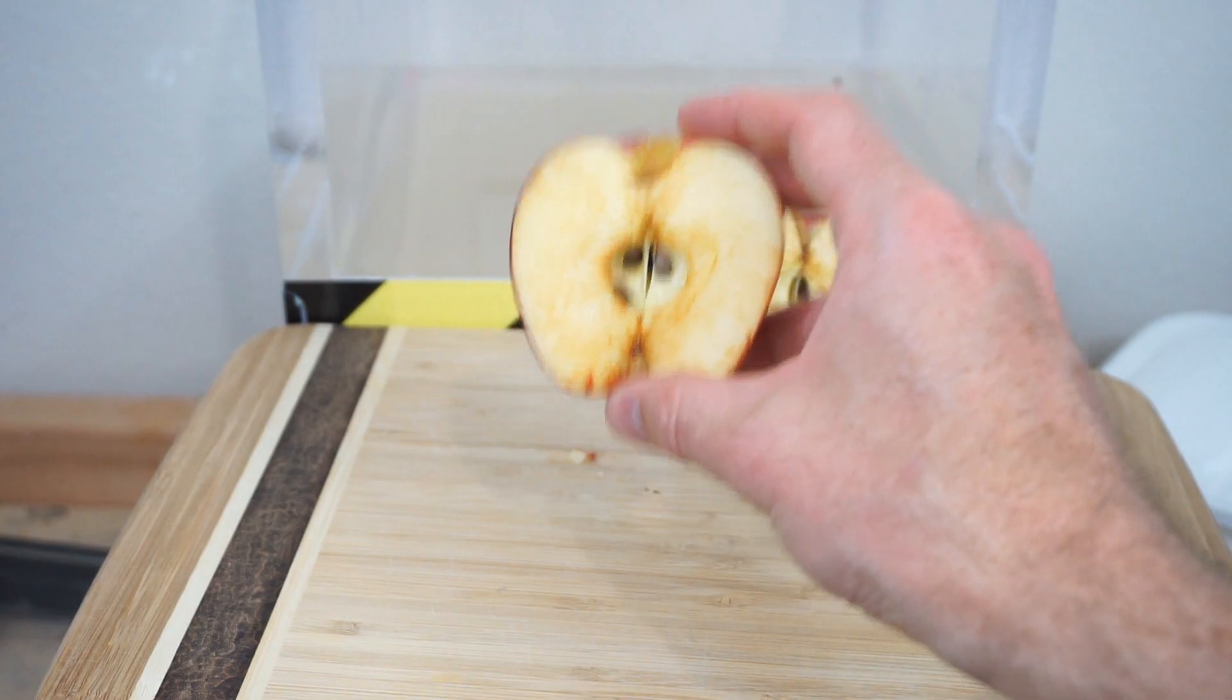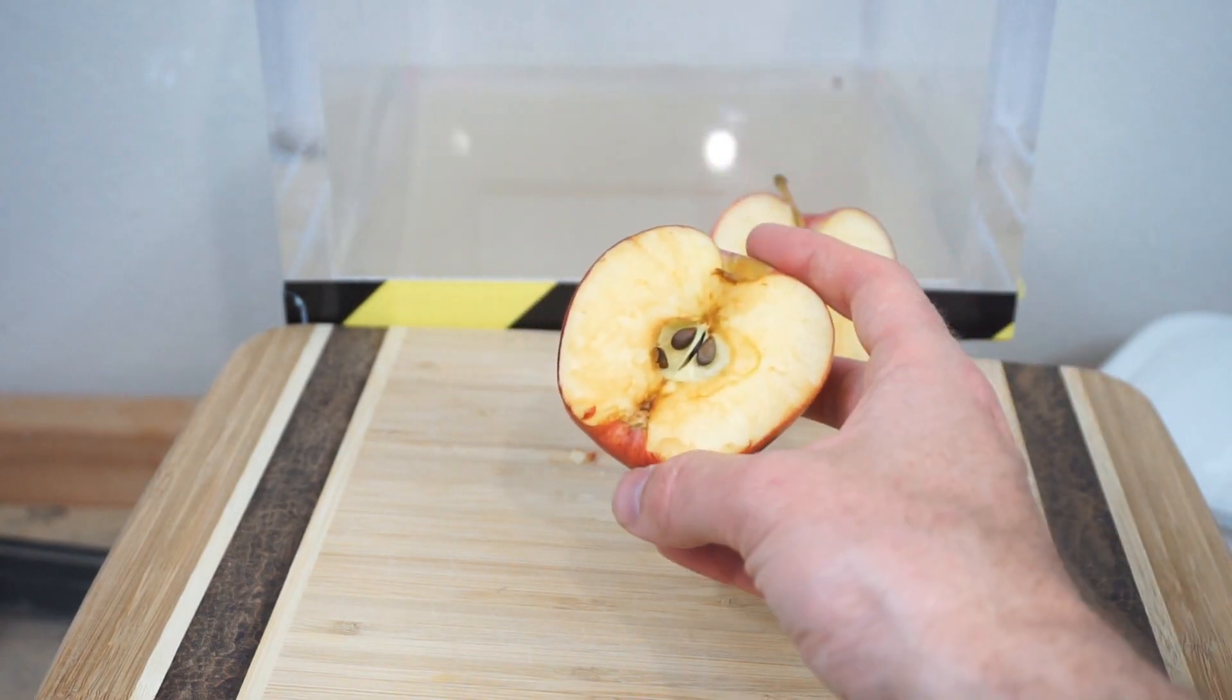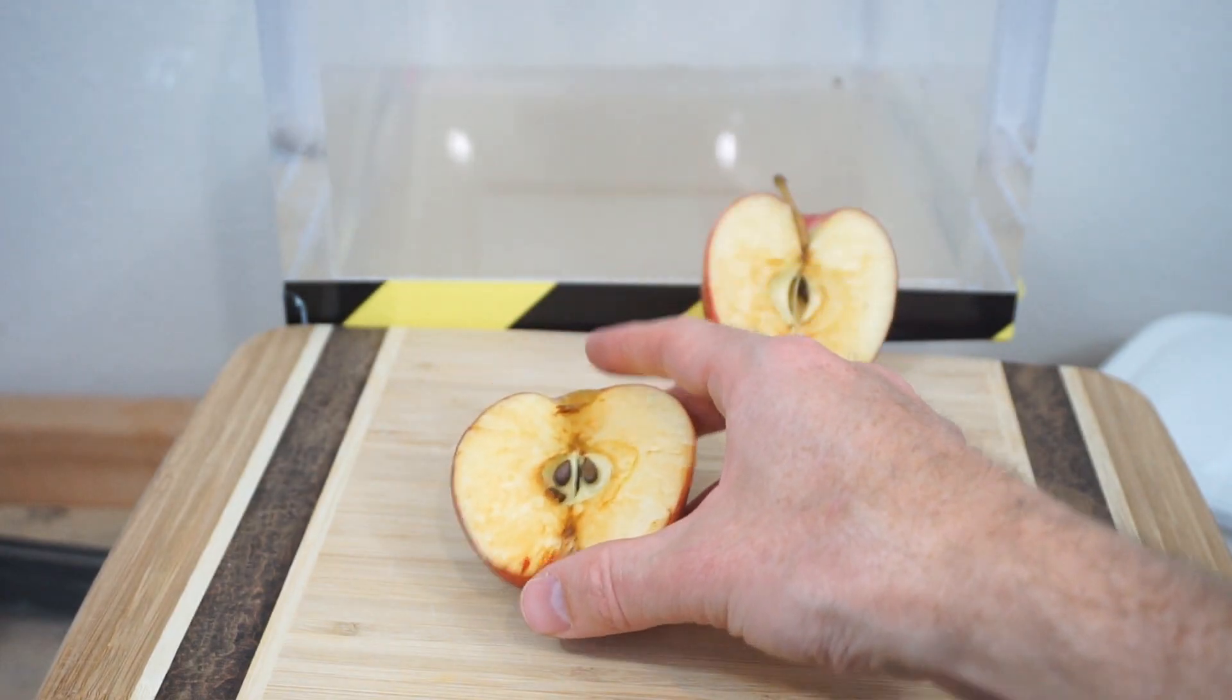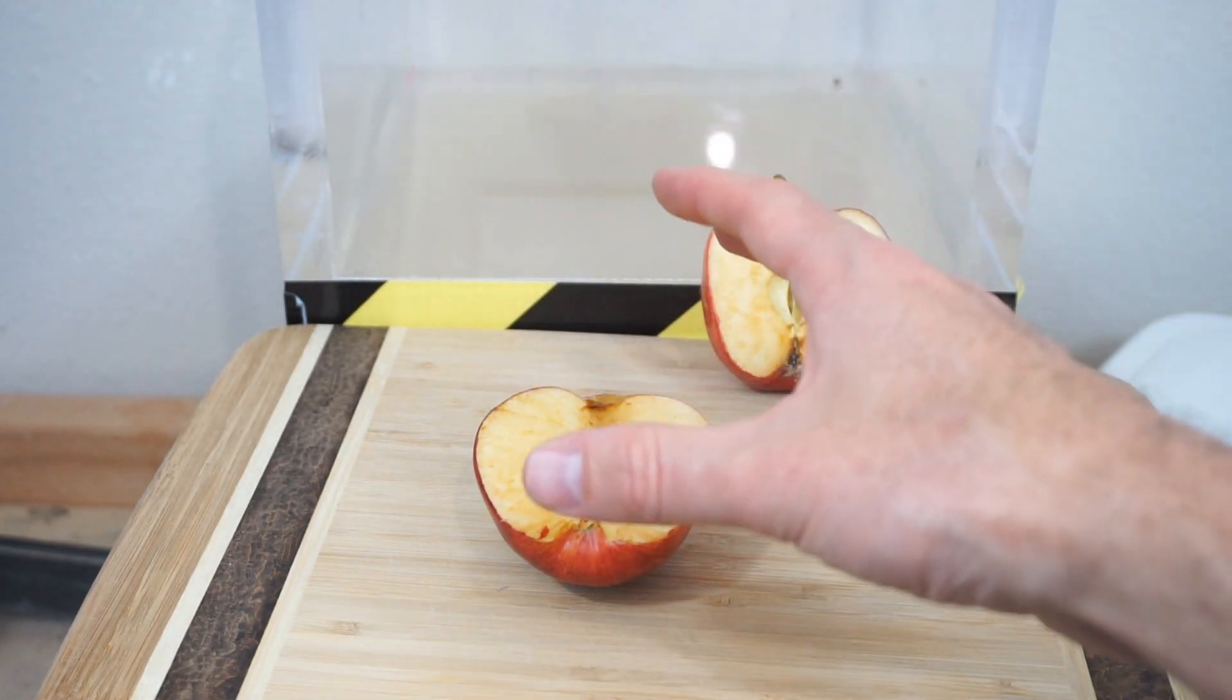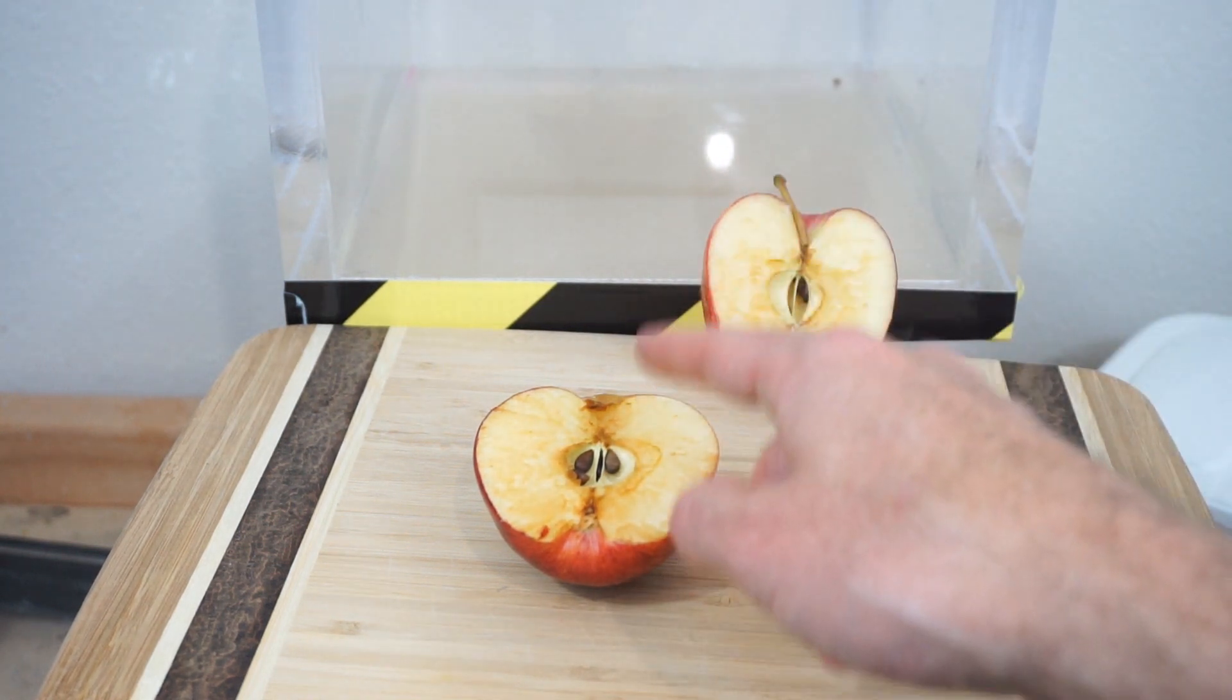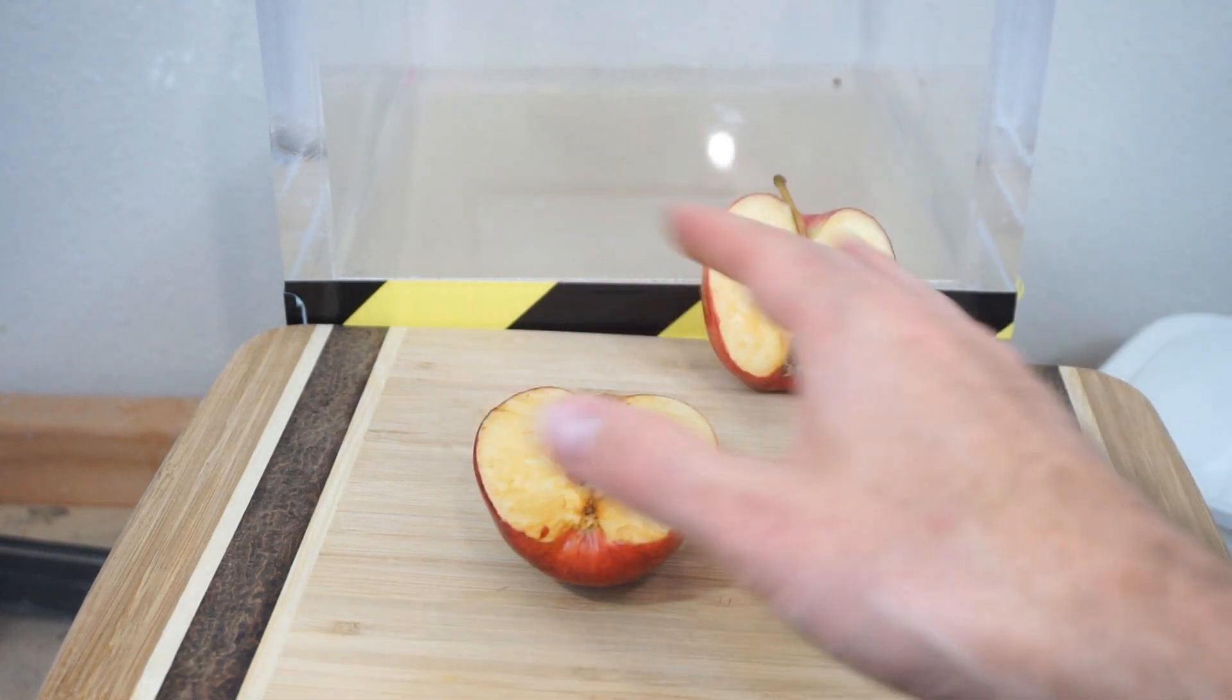Another thing you can do besides a vacuum chamber to stop apples from going brown is to put lemon juice on it. And that's because lemon juice has a lot of vitamin C in it and the vitamin C reacts with the oxygen before the enzyme reacts with the oxygen that makes it turn brown. And so it protects it from turning brown.